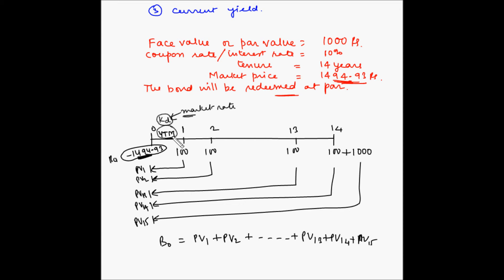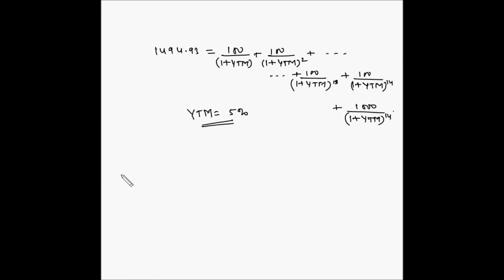As we had seen in the videos for bond with maturity, in order to find the present value of the bond we discount the cash flows by the required rate of return or the market rate — whatever rate is prevalent in the market or being offered by other bonds. The yield to maturity equates the present value of the bond with the future cash inflows, and the rate which makes them equal is the yield to maturity. So these two will be the same.